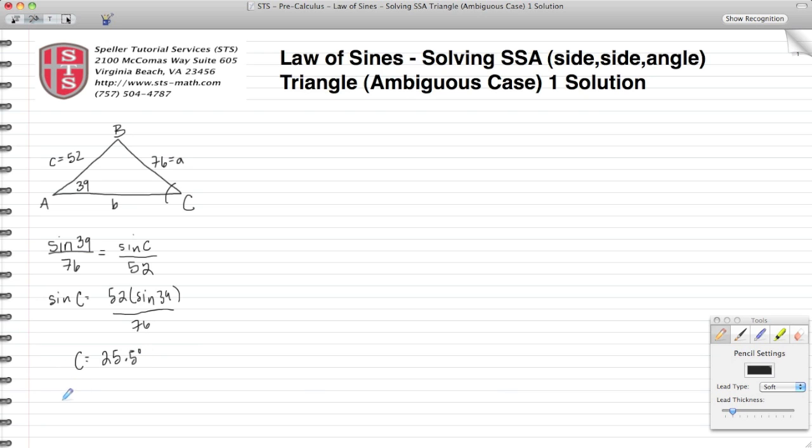To do that, let's create a variable C₂ and let's do 180 minus the C value that we found, 25.5, and we see that C₂ comes out to 154.5 degrees.